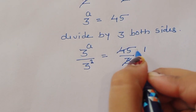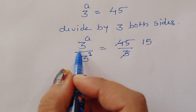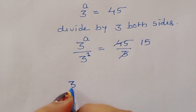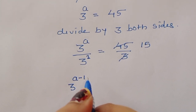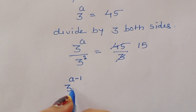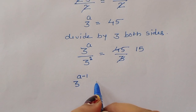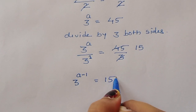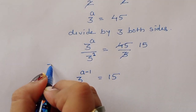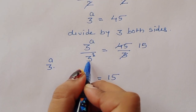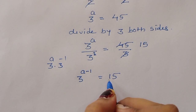45 divided by 3 is 15. So we can write 3 power a times 3 power minus 1, which gives us 3 power a minus 1 is equal to 15.